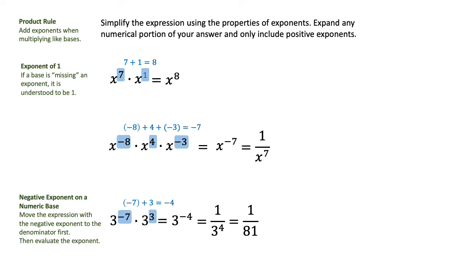And this time, we actually have a numeric base raised to a negative exponent. The whole thing has to go to the denominator, and you'll evaluate 3 to the fourth in the denominator to get 1 over 81.